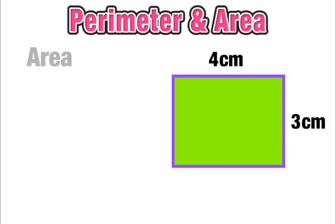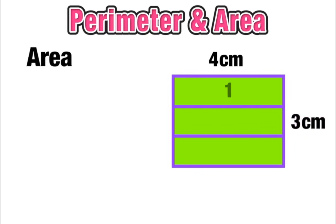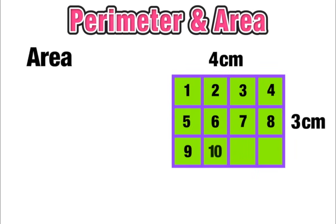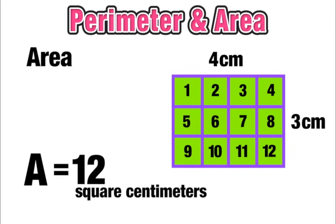Now let's find the area of this figure. The width is 3 centimeters, so we visualize cutting it into 3 equal horizontal parts, each 1 centimeter wide. Then the length is 4 centimeters, so we cut it vertically into 4 sections, each 1 centimeter — creating those square units. Counting them up, this rectangle has an area of 12 square centimeters.